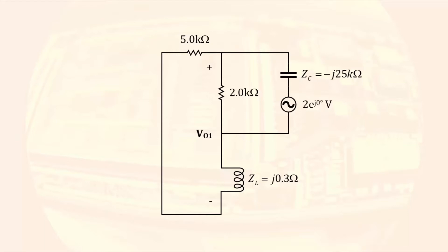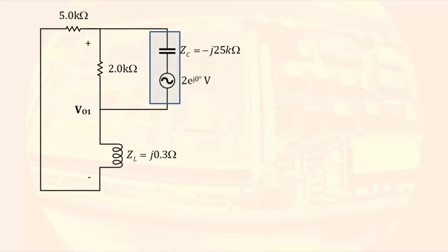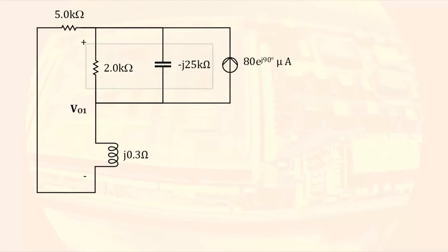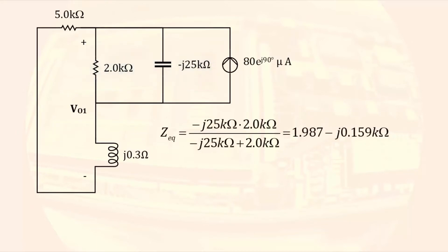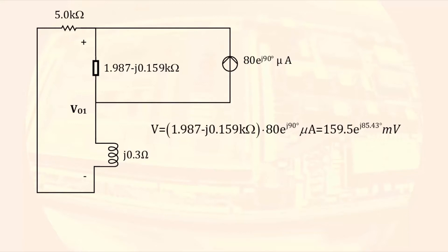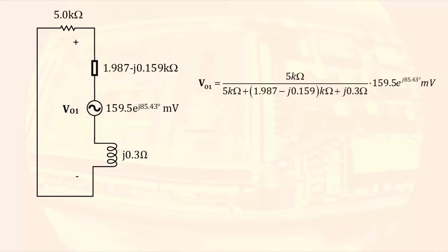The circuit demonstrates another available technique. The voltage source is in series with the -j25 kilohm impedance. A voltage source in series with an impedance can be transformed into a current source in parallel with the same impedance — source transformations can still be done in the phasor domain. Taking the voltage divided by the impedance results in an 80 microamp current source with a phase angle of 90 degrees. The 2 kilohm resistor in parallel with the -j25 kilohm impedance combines to 1.987 - j0.159 kilohms. Performing another source transformation, we multiply the current times the impedance and redraw the circuit with all elements in series, allowing voltage division to determine VO1 as the voltage across the 5 kilohm resistor.